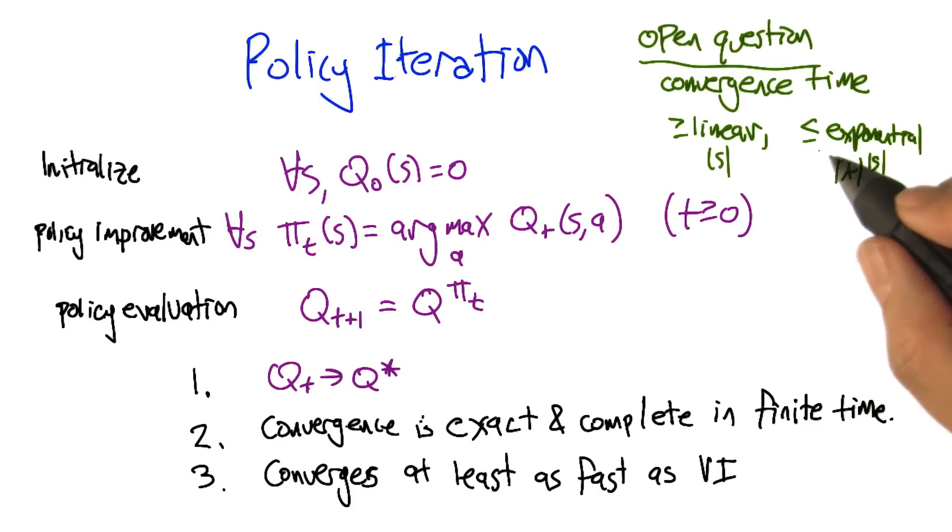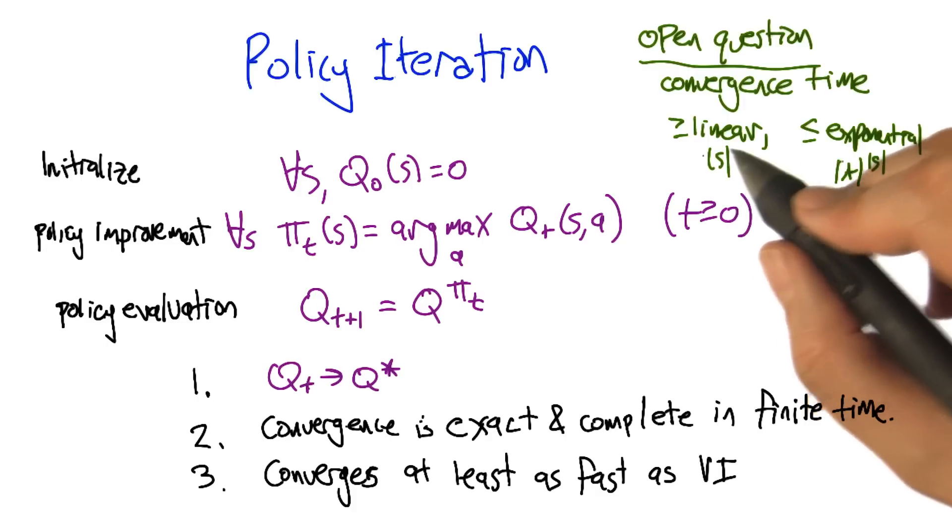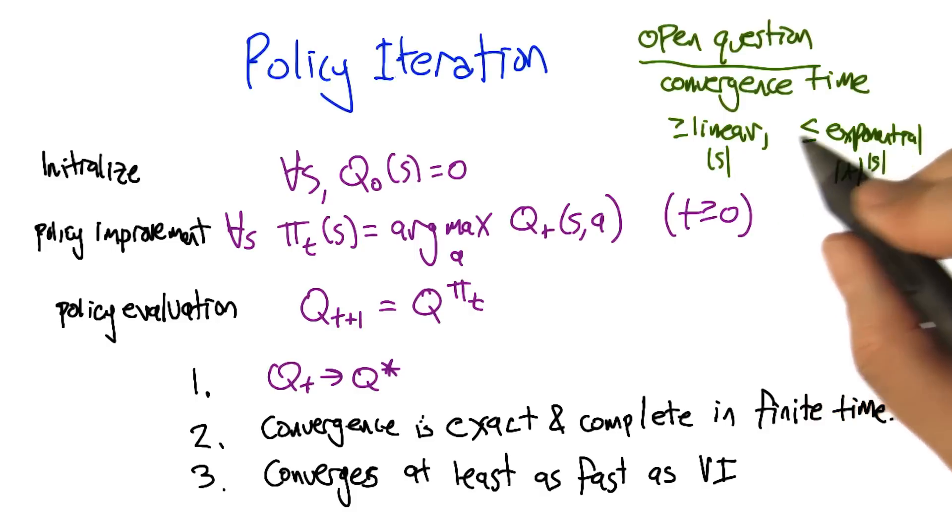And so if it's closer to linear, then it's totally awesome, and it blows the doors off of value iteration. If it's more like exponential, then it's probably still better than value iteration, but it's definitely more of a wash.